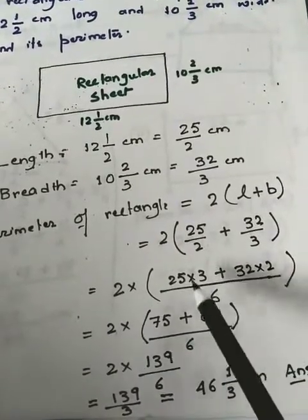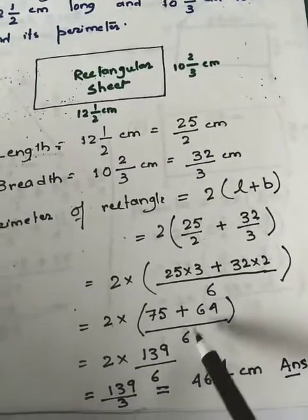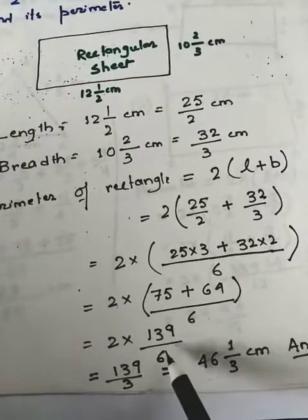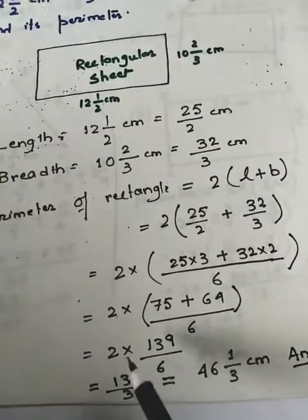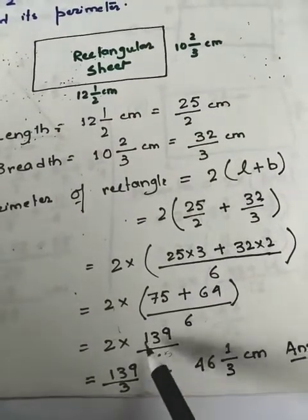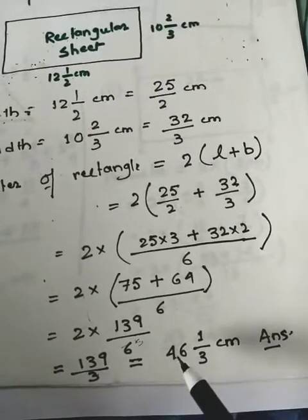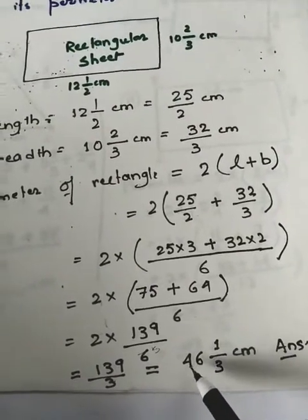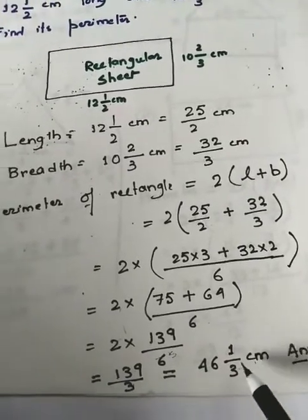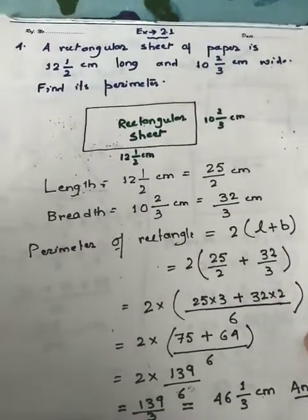So we have 2 × (75 + 64)/6. Adding 75 + 64 gives 139/6. Reducing: 2×3 = 6, so the answer is 139/3. Converting to mixed fraction form gives the final answer: 46 and 1/3 centimeters. That is the perimeter of the rectangle.